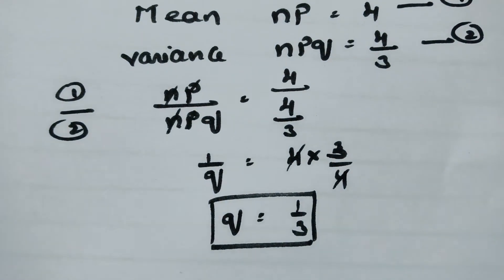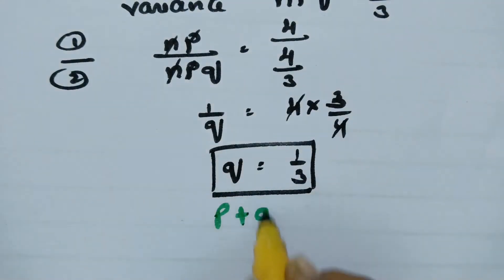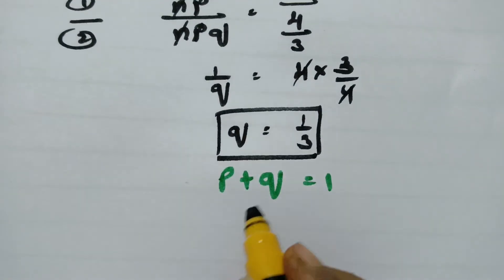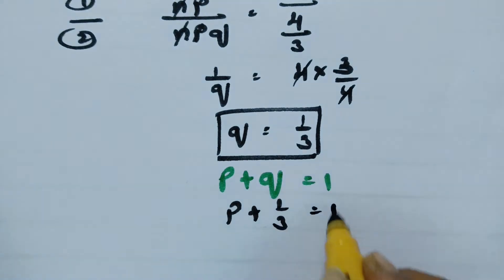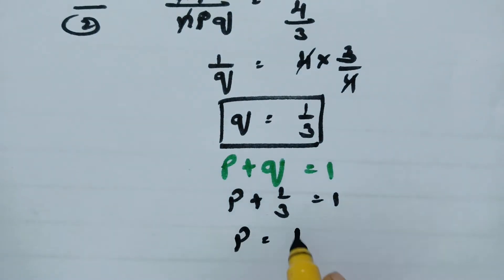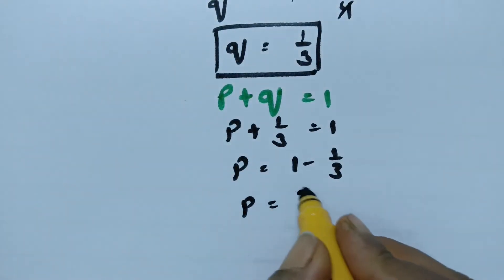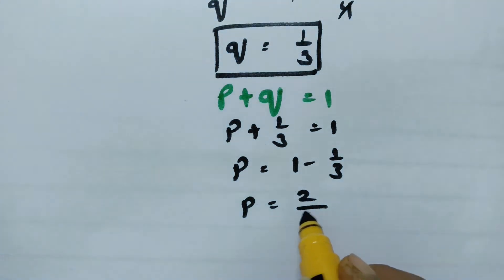We got q = 1/3. We know that the total probability p + q = 1. So after getting the q value, it is easy to get p: p + 1/3 = 1, so p = 1 - 1/3. Taking LCM as 3, this gives 3 minus 1.